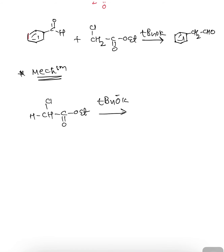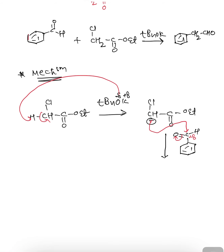The carbanion makes a nucleophilic attack onto the carbonyl carbon of benzaldehyde, because the carbonyl carbon is electropositive in nature. This results in the formation of an oxyanion intermediate. The structure can be rewritten with the benzene ring attached to a carbon bearing an O⁻ and one hydrogen atom.